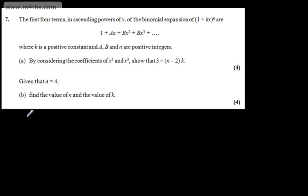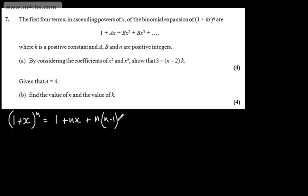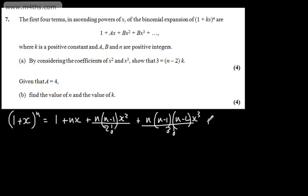In the formula book we're given the expansion of (1 + x)^n. Writing this out: (1 + x)^n equals 1 plus n·x plus n(n−1)·x² divided by 2 factorial, which is 2, plus n(n−1)(n−2)·x³ divided by 3 factorial, which is 6, plus and so on.